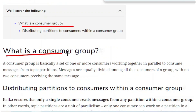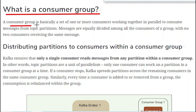So let us start. What is a consumer group? A consumer group is basically a set of one or more consumers working together in parallel to consume messages from the topic partitions. There are a number of consumers working together in a group — that is what we call a consumer group. Messages are equally divided among all the consumers of a group, with no two consumers receiving the same messages.